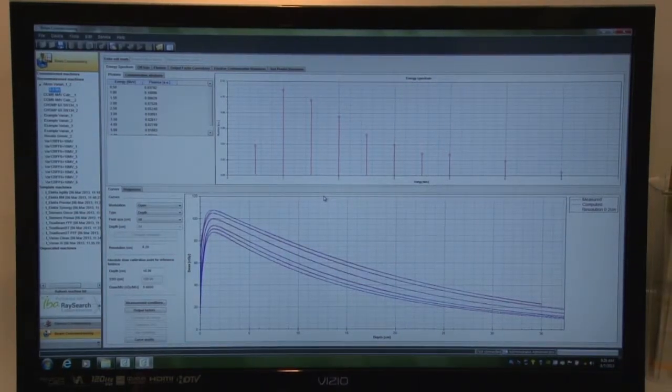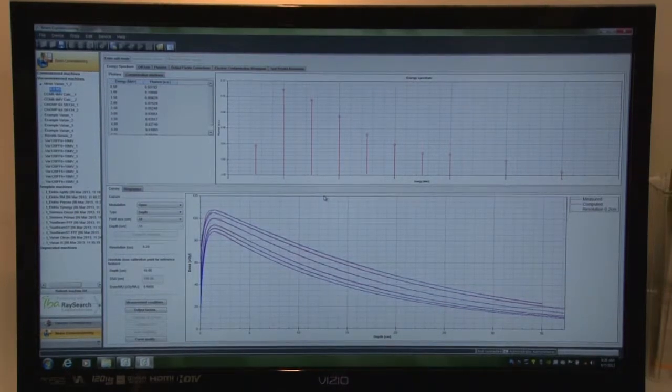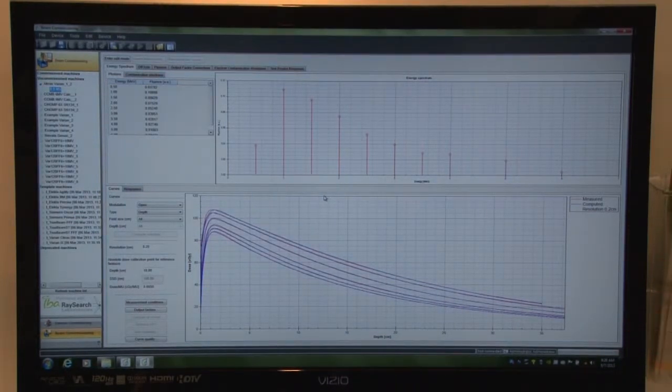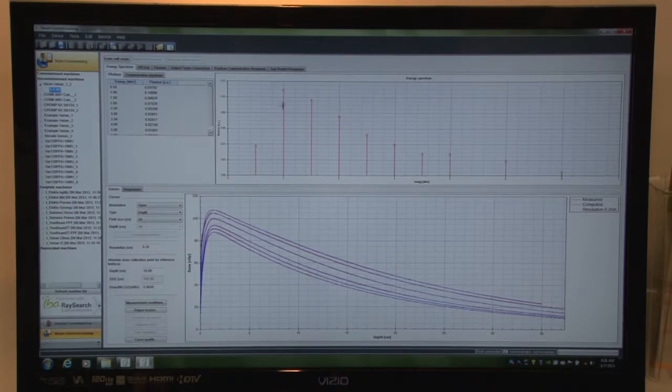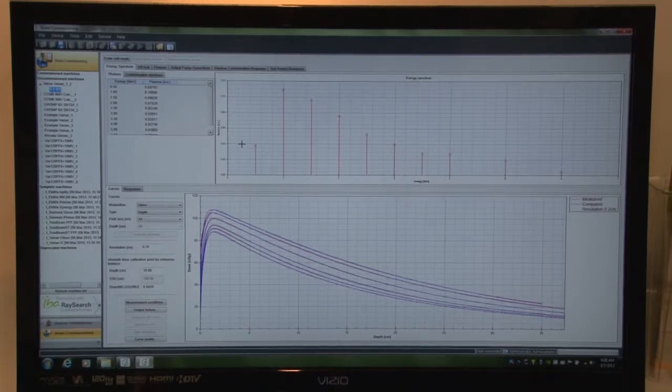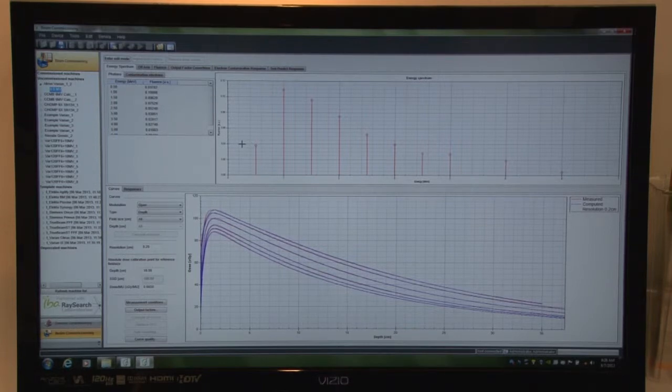So Compass is a tool that allows you to do calculations against your TPS. The way we are able to do calculations is we build a specific beam model, which you can see here, for each energy on your specific machine. So this is very specific to your environment. We simply take raw scan data and from that we are able to build an actual model that fits your machine and your energies.